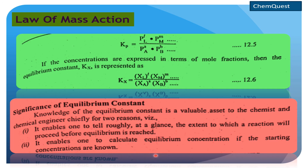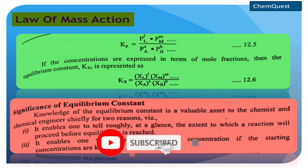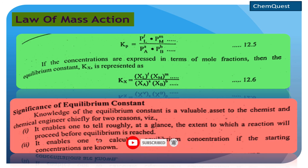اس کے علاوہ دوسرا فائدہ: it enables one to calculate equilibrium concentration if the starting concentrations are known — اگر starting concentrations معلوم ہوں تو اس equation کے through equilibrium concentration of reactants and products determine کر سکتے ہیں۔ So this is the end of today's lecture. In the next lecture we will study the relationship between different equilibrium constants — Kc، Kp اور Kx کے درمیان relationship study کریں گے۔ Till then, Allah Hafiz.